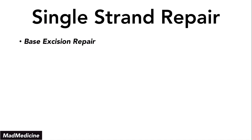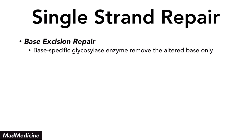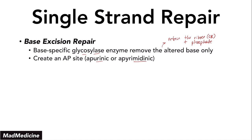The next one is a little bit more complicated — it's called base excision repair. In base excision repair, a base-specific glycosylase enzyme will remove the altered base only. You retain the ribose sugar backbone plus the phosphate group of the nucleotide. This creates something called an AP site — an apurinic or apyrimidinic site — meaning this site doesn't have a base associated with it.